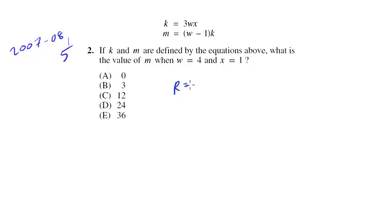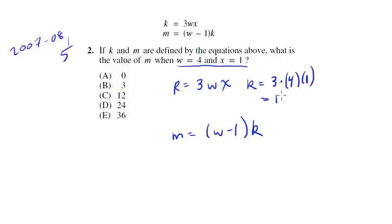So we have k is equal to 3wx, and we have m is equal to w minus 1 times k. So let's go ahead and plug in. We have w and we have x, so k then is going to equal 3 times 4 times 1. Getting this information here, just replacing it. So this is going to equal 12.